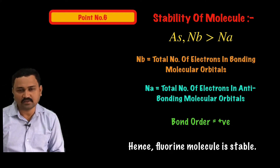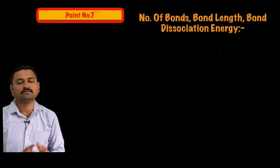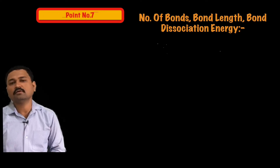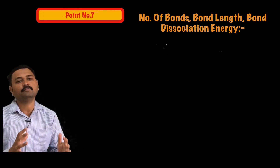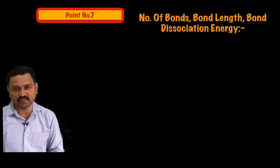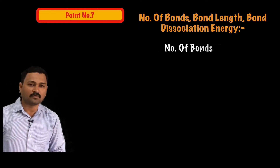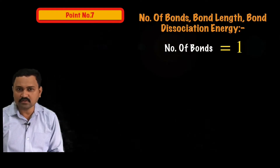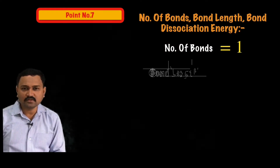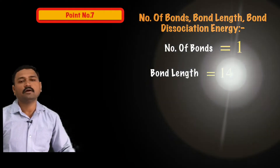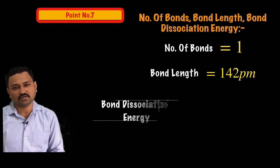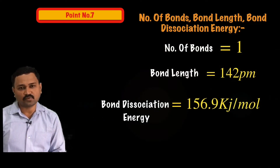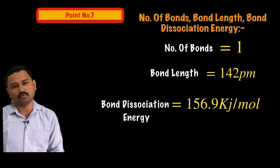Point number seven: number of bonds, bond length, and bond dissociation energy. The number of bonds equals one, consistent with the bond order. The bond length of fluorine molecule is 142 picometers and the bond dissociation energy is 156.9 kilojoules per mole.